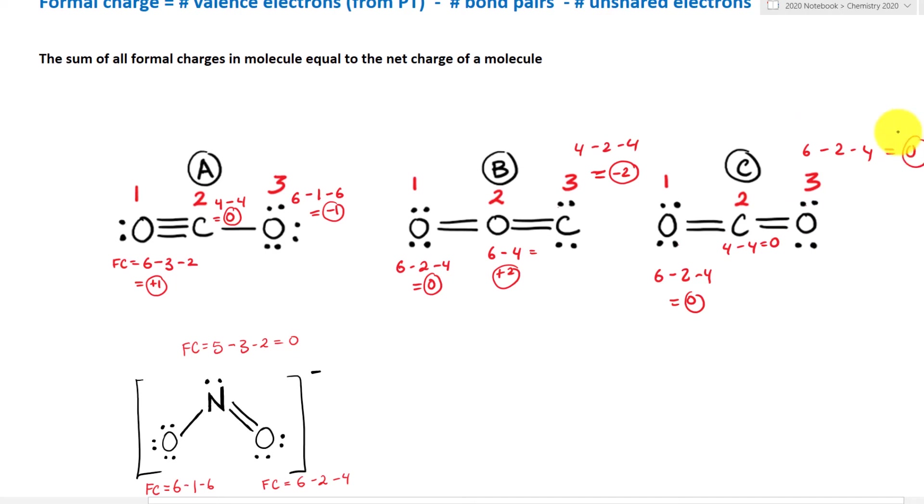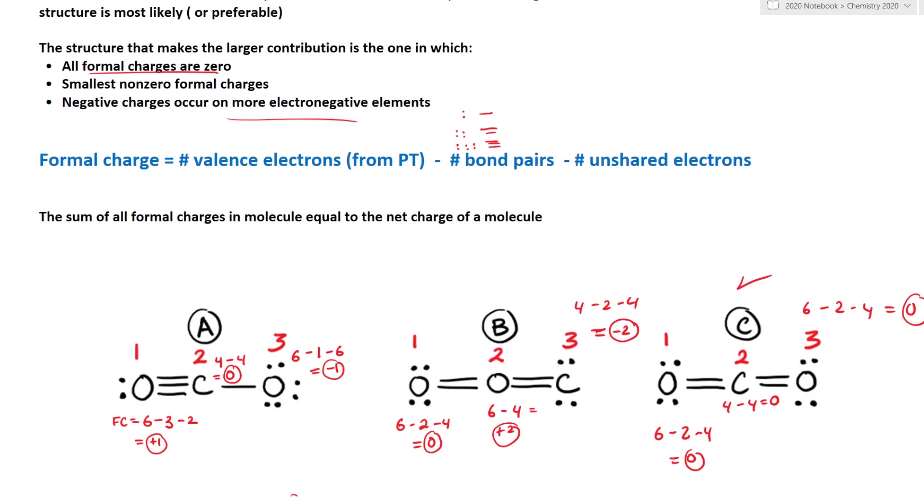So if looking at the formal charge of all the three Lewis dot structures, what do we notice? Well, we notice in this case, it's going to be this one right here. So most likely, in nature, you will see carbon dioxide exists in this form. And as you can see, we follow the step where we put the least electronegative atom in the center. This one and this one is very close, isn't it? Where carbon is less electronegative than oxygen. So with that common pattern, we can still see which of the Lewis dot structure that we can get it right the first time. So that is how we assign formal charges to each atom in a molecule to determine which valid Lewis dot structure is most likely to happen in nature.